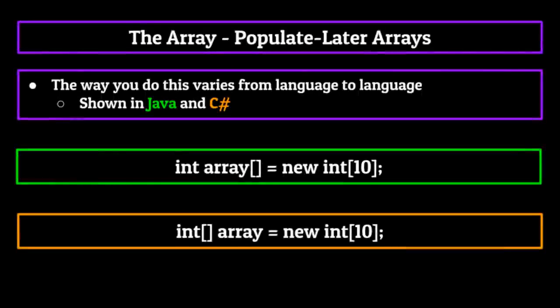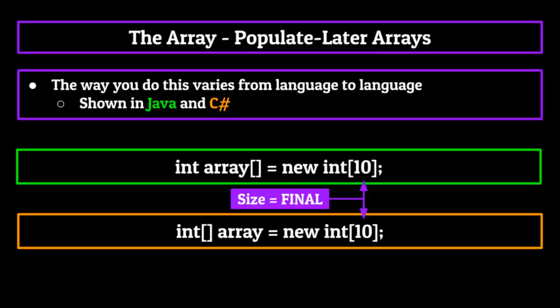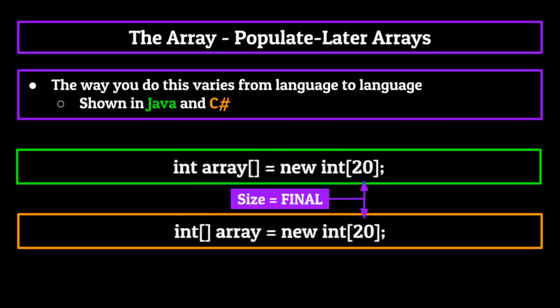Shown on your screen now are two ways in which we can do this in Java and C#. There is no Python section because creating populate-later arrays is not conventionally possible in the base version of Python without the use of more advanced data structures or packages. With Java and C#, just as with the other example, there are slight differences in the syntax, but it generally follows some set pattern: the type of the array followed by a name for the array, which is then set equal to a size for the array. Remember, this size is final and cannot be changed outside of this initial call. If you end up creating an array with size 10 but later in the program find that you need more space for it, you can always go back to where you instantiated it and change the size, but after that line of code runs, there's no conventional way to increase it.